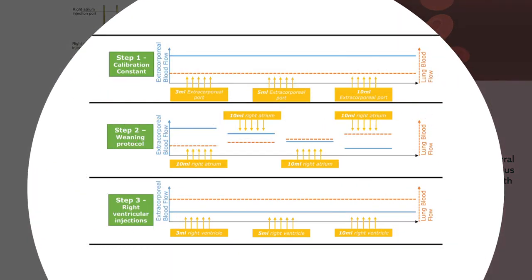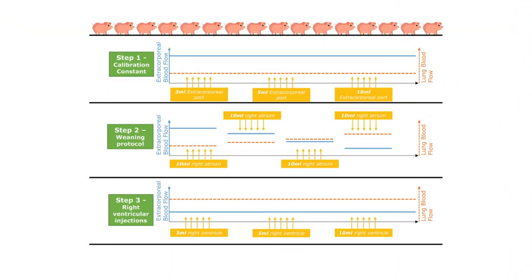The researchers tested their hypothesis in 16 pigs that were centrally cannulated for veno-arterial ECMO. First calibration constants were calculated with injections of 3, 5, and 10 milliliters of cold saline into the ECMO circuit at a flow rate of 4 liters per minute.